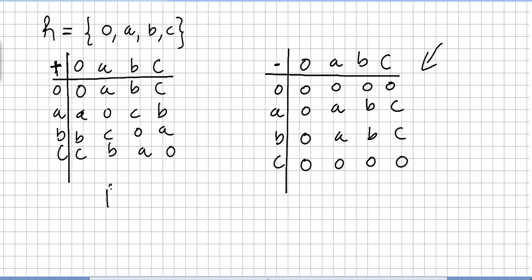This finishes the chapter on examples of rings. Now we have a richer structure — a set with two operations — and we are going to introduce concepts similar to those used for groups, such as ring homomorphisms, ring isomorphisms, and factor rings.